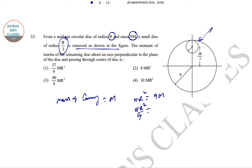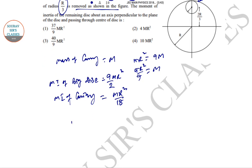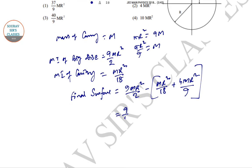So moment of inertia of big disk is 9MR² by 2, and moment of inertia of cavity is MR² by 18. So moment of inertia of the final surface will be 9MR² by 2 minus MR² by 18 plus 4MR² by 9. Hence it is 9 by 2 MR² minus MR² plus 8MR² by 18. So finally it is 4MR².